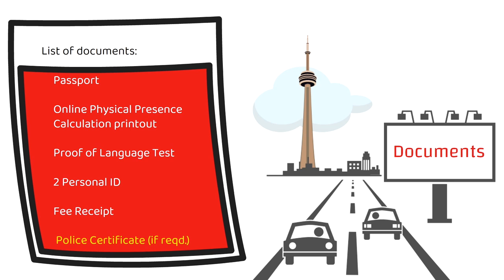Then there's the police clearance certificate, which I've highlighted because it's not mandatory for everyone. Only if you've stayed outside Canada for more than six months in a row do you need to submit the PCC for that country. For example, if you were living in the US, did a soft landing, moved back to the US after becoming Canadian PR, and then after one year moved to Canada — in that case, you'd need the police certificate for the US. Similarly for India or any other country. There are also some other optional documents that might be required, and I'll show you the complete application package. My goal through these videos is not to spoon-feed you, but to enable you so that you can apply for these applications yourself.